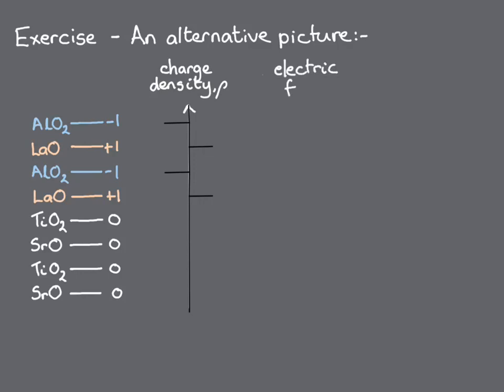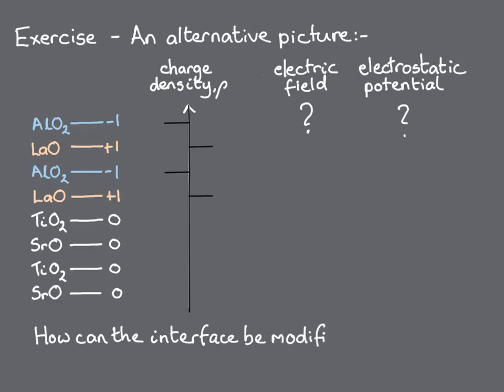Your task is to use your knowledge of basic electrostatics to work out the electric field and the electrostatic potential corresponding to that charge density. You should find that the electrostatic potential diverges with thickness, which will lead to an energetically unstable situation in a real system. Then think about how you could modify the interface in order to prevent the potential from diverging, and how your solution will affect the interfacial properties.